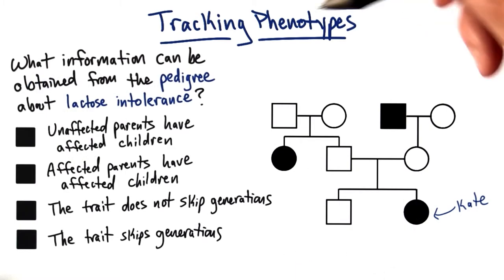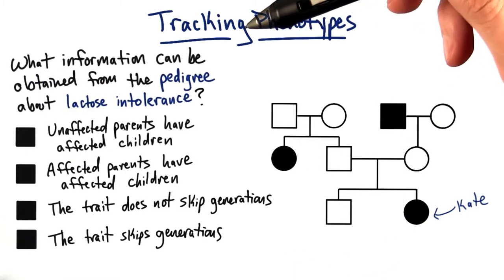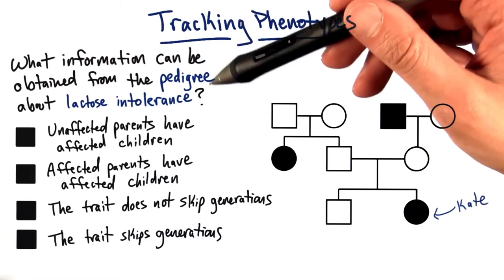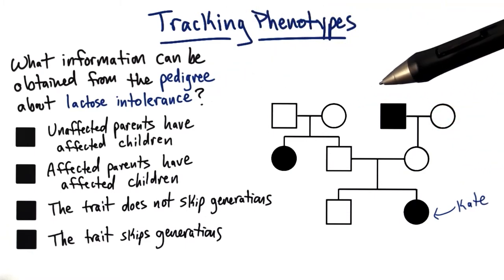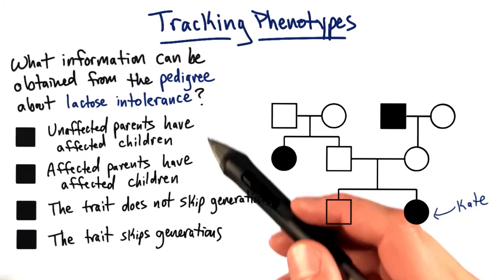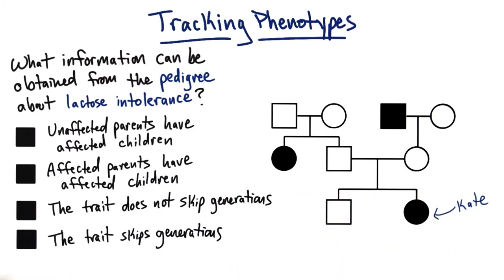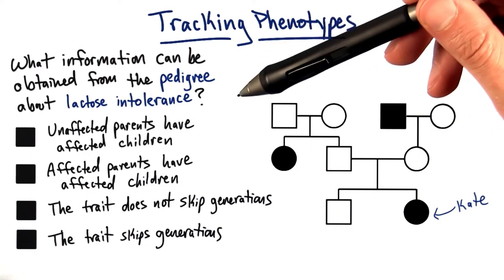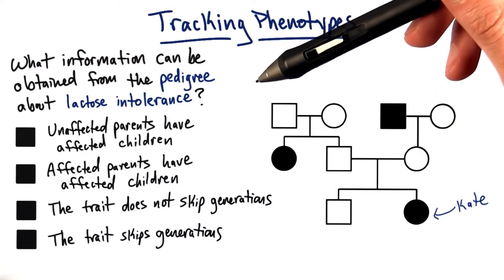So what other information do you think you could get from this pedigree of Kate's family concerning the trait of lactose intolerance? Take a look at each of these particular options, then look at the pedigree, and determine whether or not you think it's true. Check any and all boxes that you think apply.